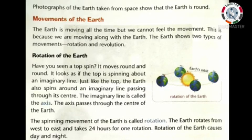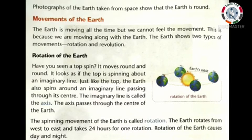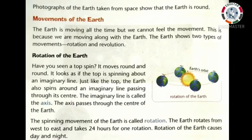Rotation of the Earth: Have you seen a top spin? It moves round and round. It looks as if the top is spinning about an imaginary line. Just like the top, the Earth also spins around an imaginary line passing through its center. This imaginary line is called the axis. The axis passes through the center of the Earth. The spinning movement of the Earth is called rotation. The Earth rotates from west to east and takes 24 hours for one rotation.